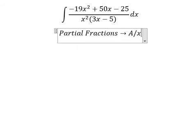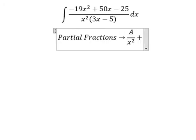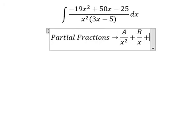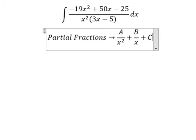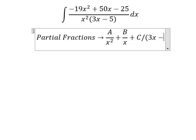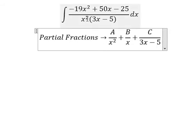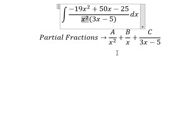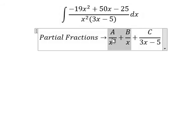I will put capital A over x squared, capital B over x, and capital C over 3x minus 5. Because we have x squared, we have two fractions. We need to reduce the power from 2 to 1.